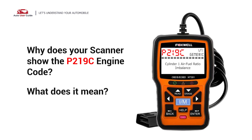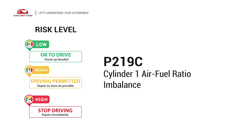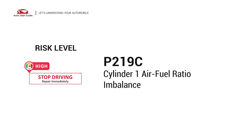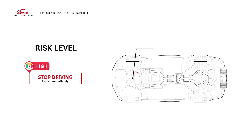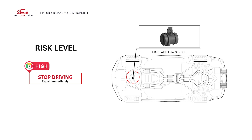Why does your scanner show the P219C engine code? What does it mean? P219C is a diagnostic trouble code for Cylinder 1 Air Fuel Ratio Imbalance. It indicates that the vehicle's engine control module has detected that the air-fuel ratio in cylinder number 1 is significantly different from the other cylinders.